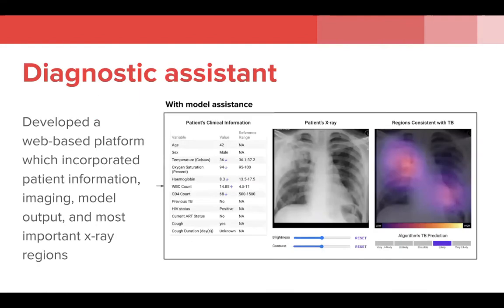We developed a web-based TB diagnostic assistant for clinicians that integrated the algorithm's predicted probability of a TB diagnosis with the clinical input, chest x-ray, and a class activation map, or CAM, which highlighted regions of the chest x-ray that had had the greatest influence on the algorithm's decision.